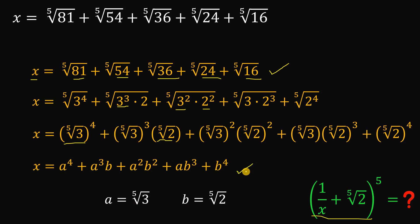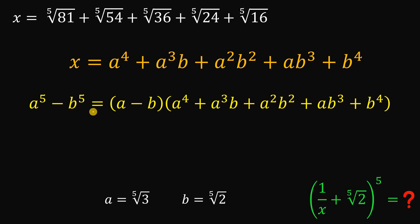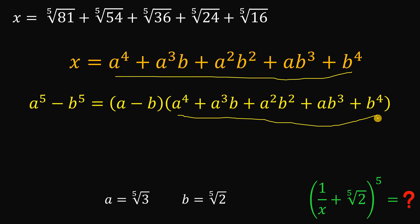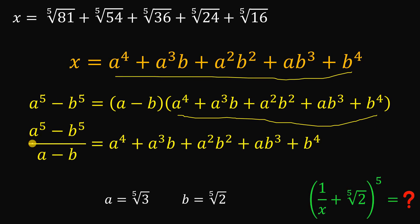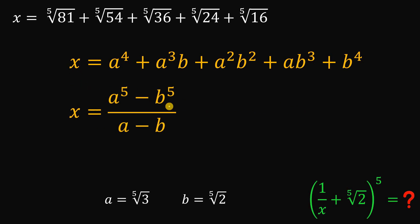This result is very familiar. Recall the identity: a to the fifth power minus b to the fifth power factors as (a minus b) times (a to the fourth power plus a cubed b plus a squared b squared plus a b cubed plus b to the fourth power). Notice this second factor is exactly our expression for x. So we can write x as (a to the fifth power minus b to the fifth power) all over (a minus b).